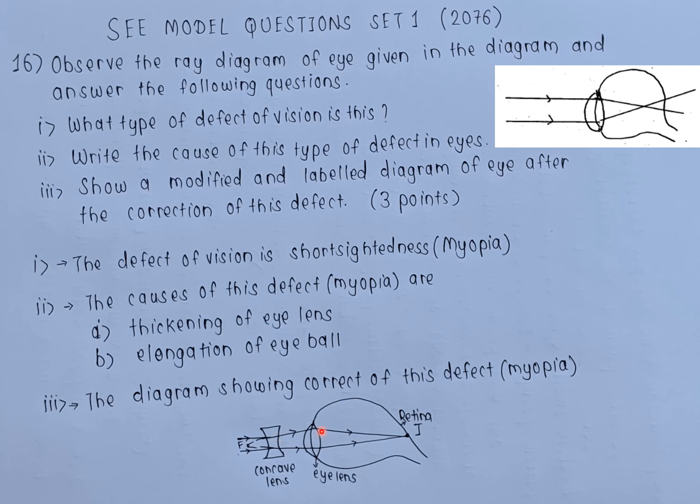If you use a suitable concave lens with proper focal length, then you'll find that the image is formed at the retina. Make sure you label the lens and other parts.